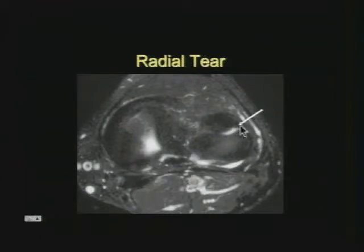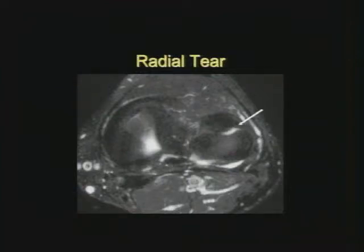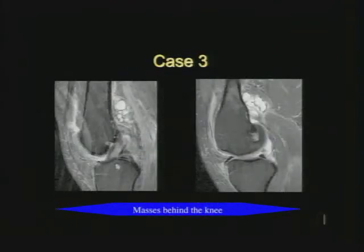T2-weighted fat-saturated images are pretty good for radial tears, but many tears don't appear high signal on long TE images. Your ideal sequences are proton density or T1-weighted images on routine spin echoes. You don't want T2 for most meniscal tears, though you do get good morphologic information from T2 fat-sat.